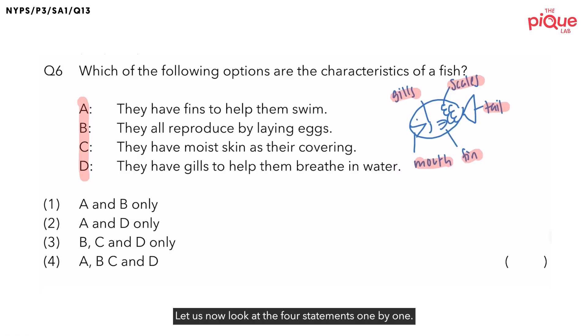Let us now look at the four statements one by one. Statement A. Is it true that fish have fins to help them swim? This is true. Earlier, we have already determined that the function of the fin is to help to balance the fish and to allow the fish to steer from left to right. Thus, it is indeed true that the fins do help the fish to swim. Hence, I will put a tick over here.